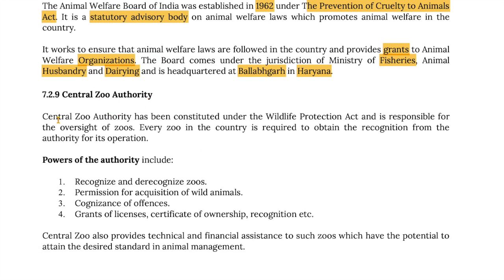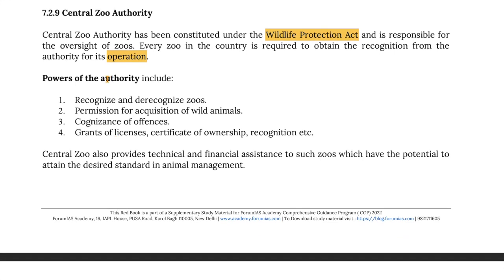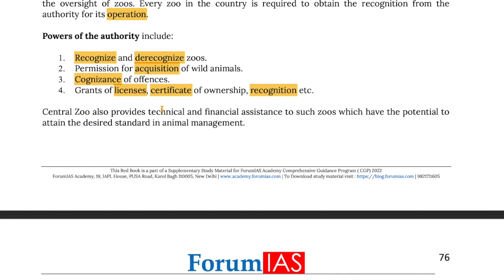The Central Zoo Authority has been constituted under the Wildlife Protection Act of 1972 and is responsible for oversight of zoos. Every zoo in the country is required to obtain recognition from the authority for its operation. The powers of the Central Zoo Authority include recognition and derecognition of zoos, permission for acquisition of wild animals, cognizance of offenses, grants of licenses, certificates of ownership and recognitions, etc. The Central Zoo Authority also provides technical and financial assistance to such zoos which have the potential to attain desired standards in animal management.